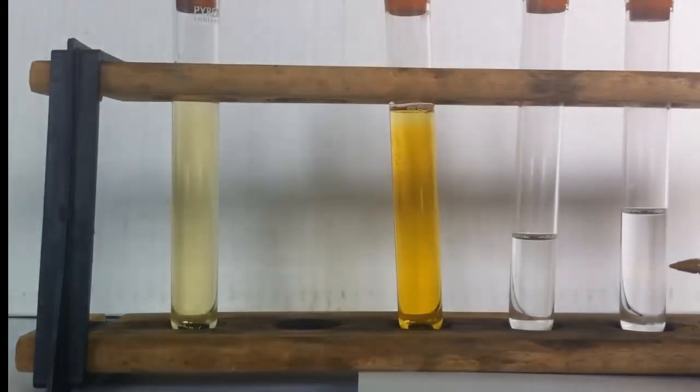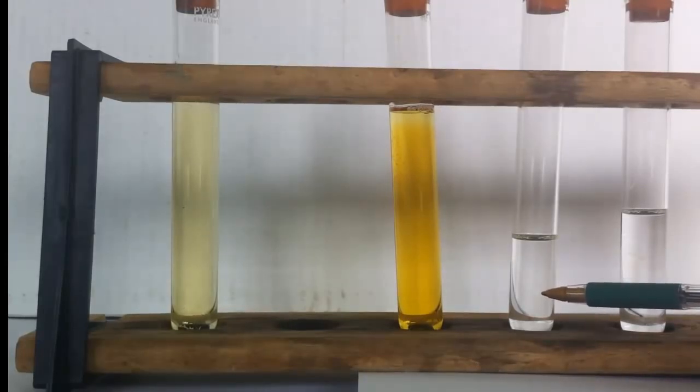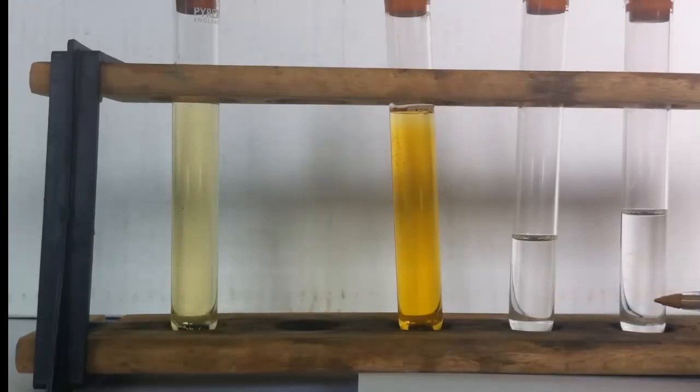In these two test tubes I have liquid hydrocarbons. This is cyclohexene which contains a carbon-carbon double bond in each molecule. And this is cyclohexene. It has no carbon-carbon double bonds.